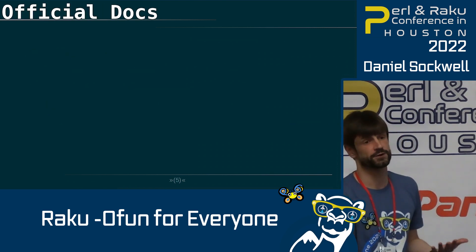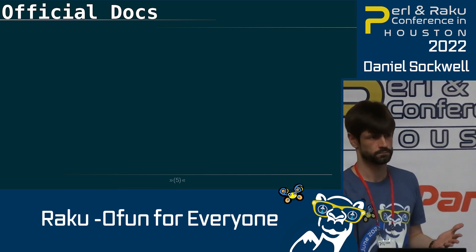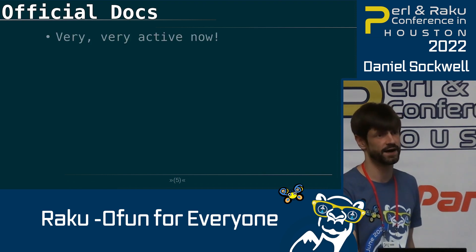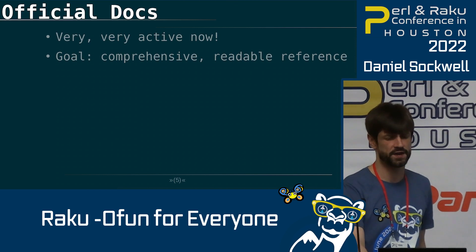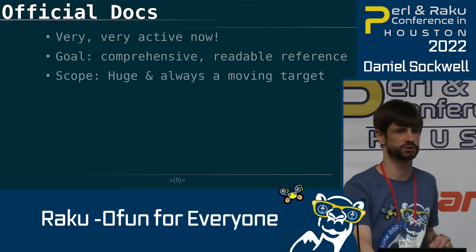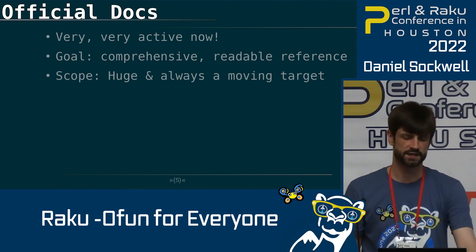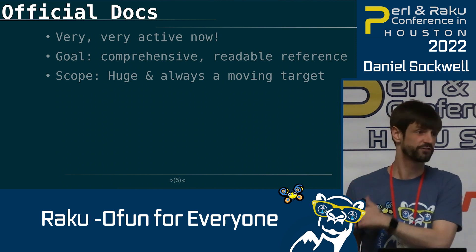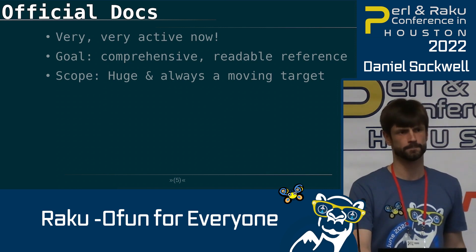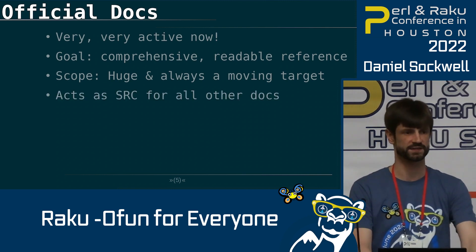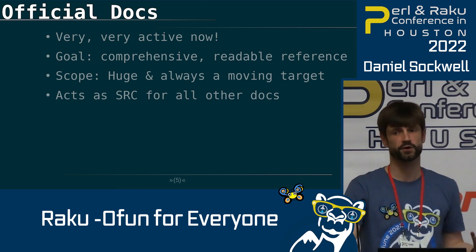The next step after the very structured approach of a course or book is the official documentation. Given the size of the Raku language and the breadth and flexibility of it, the official docs are extremely active and always aiming at a moving target. So it's hard for them to be 100% up to date, but there's a tremendous amount of activity and energy there, with the goal of producing something that is both a usable comprehensive reference to the Raku language and something that is readable for programmers of various abilities. It also acts as a source repository for other less official forms of documentation.